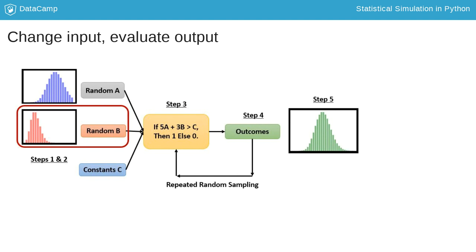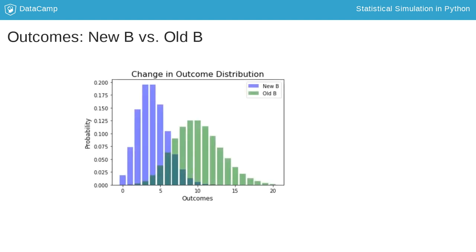Let's see what happens if we do that. We might find that as a result of the change in B, the distribution of outcomes has changed significantly.